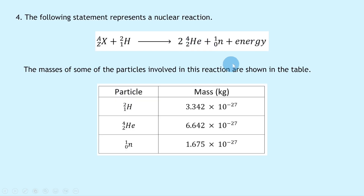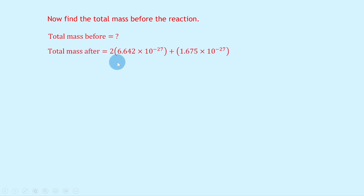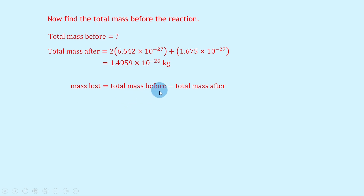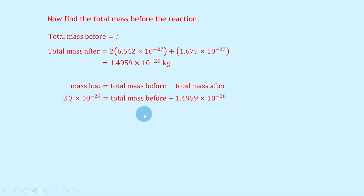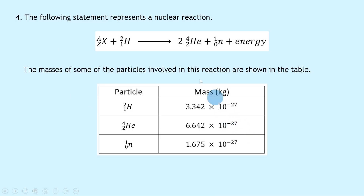Now we need the total mass before the reaction, using the lost mass and total mass after. After the reaction we have two alpha particles plus a neutron, so total mass after = 2 × 6.642×10⁻²⁷ + 1.675×10⁻²⁷ = 1.4959×10⁻²⁶ kg (not rounding here). Since mass lost = total mass before − total mass after, we get: 3.3×10⁻²⁹ = total mass before − 1.4959×10⁻²⁶, so total mass before = 1.4992×10⁻²⁶ kilograms.